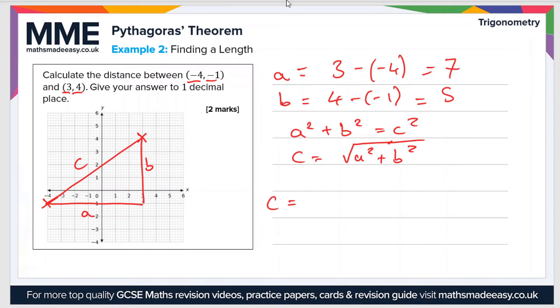So C equals the square root of 7 squared plus 5 squared, which is the square root of 49 plus 25. So that is the square root of 74. So C is the square root of 74.